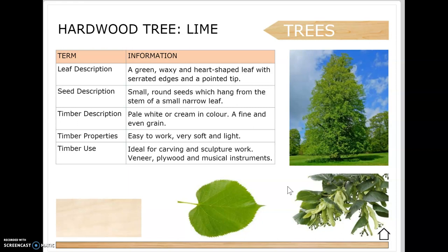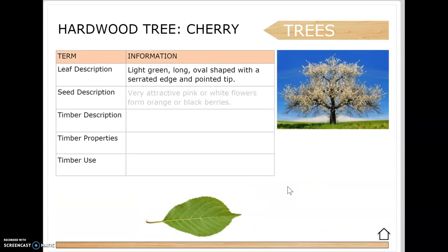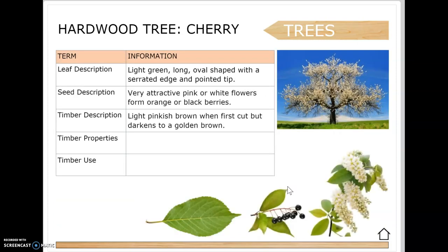Lime trees are less common but there are a few around. The leaf is green, waxy and heart-shaped with serrated edges and a pointy tip. The seeds are small round seeds hanging from the stem with a small narrow leaf. The timber is pale white and cream in color with a fine even grain. It's easy to work with, very soft and light. It's ideal for carving and sculpture work, veneer, plywood and musical instruments.